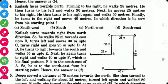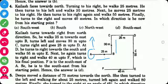Next question is Kailash faces towards north. Turning to his right. This is Kailash. He is facing at the north. After that he turned to his right, means in the east direction. He walks 25 kilometers. He then turns to his left in this direction. He walks 30 kilometers.